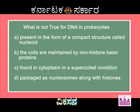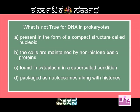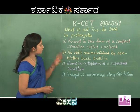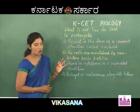So let's get started with the first question. As you can see, what is not true for DNA in prokaryotes? The first option: present in the form of a compact structure called nucleoid. B: the coils are maintained by non-histone basic proteins. C: found in cytoplasm in a supercoiled condition. And D: packaged as nucleosomes along with histones. Out of these four options, we have to pick the one which is not true or which is incorrect.